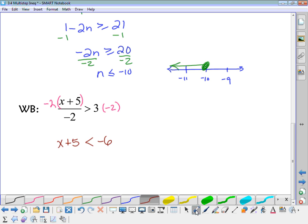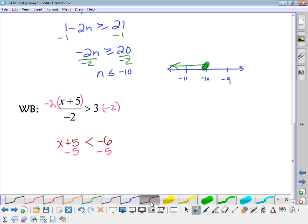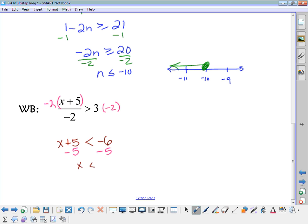All right. And then from that point, you would subtract 5. Okay, so you get x is less than negative 11. So it would be an open circle going to the left.